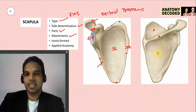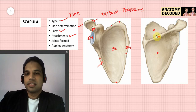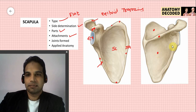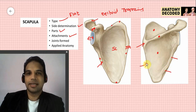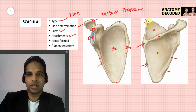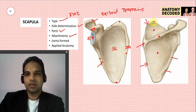On the posterior aspect: the supraspinous fossa has supraspinatus, the infraspinous fossa has infraspinatus. The spine of the scapula has attachments of deltoid and trapezius. Along the lateral border, the upper part has teres minor and the lower part has teres major. Along the medial border, opposite the spine is rhomboids minor, and below is rhomboids major.